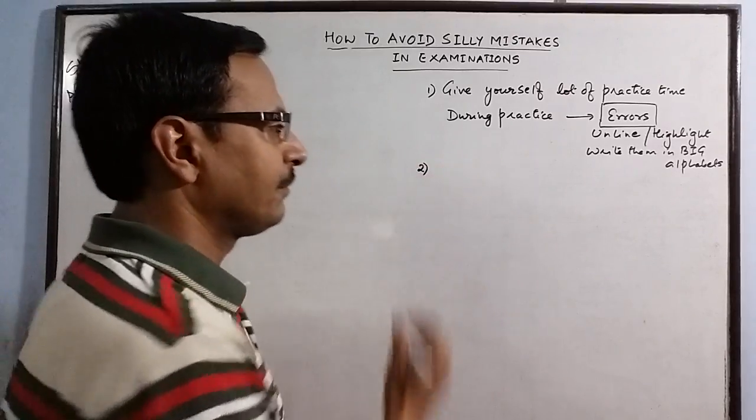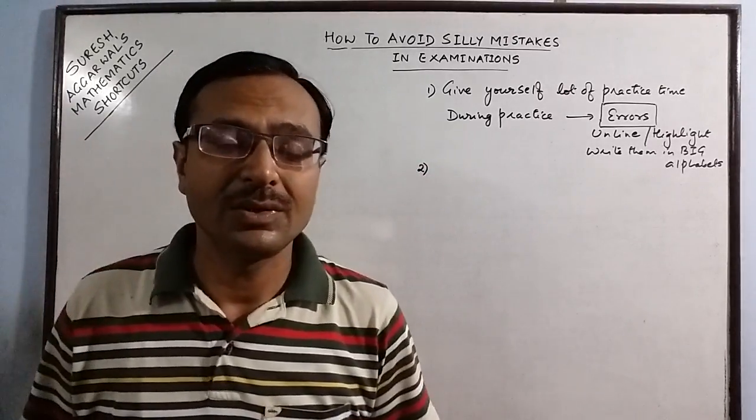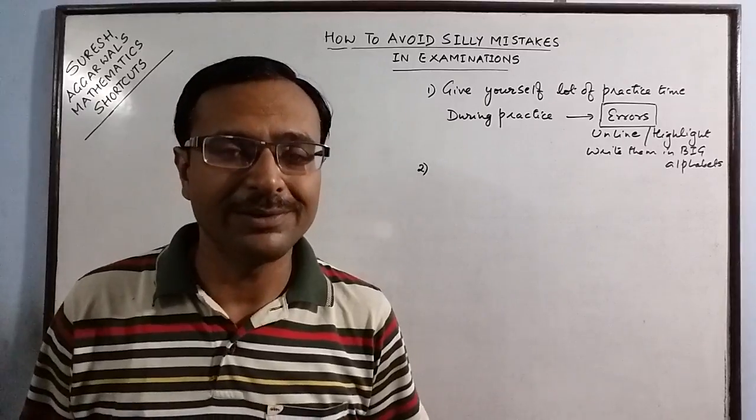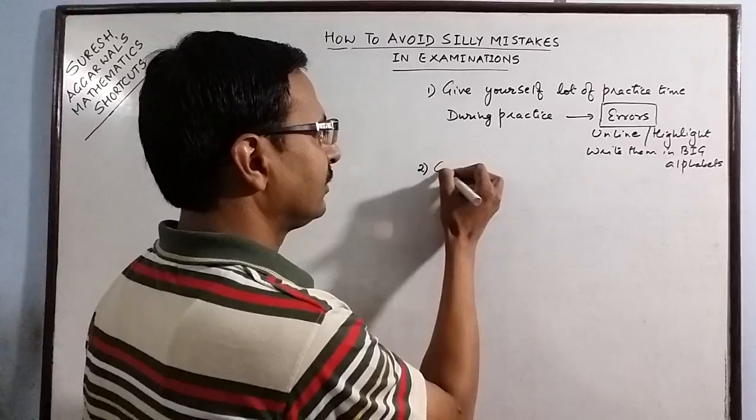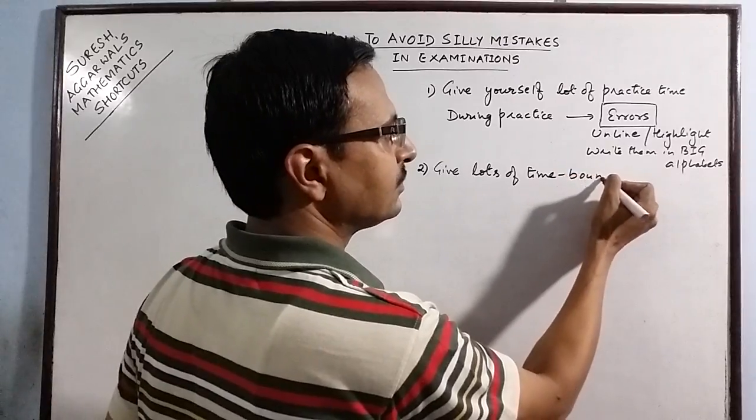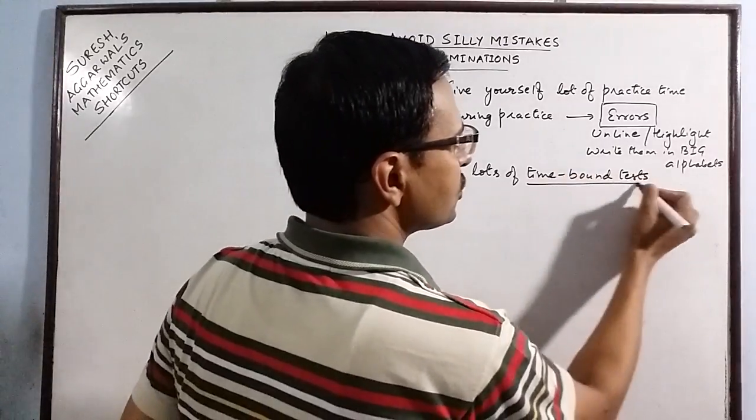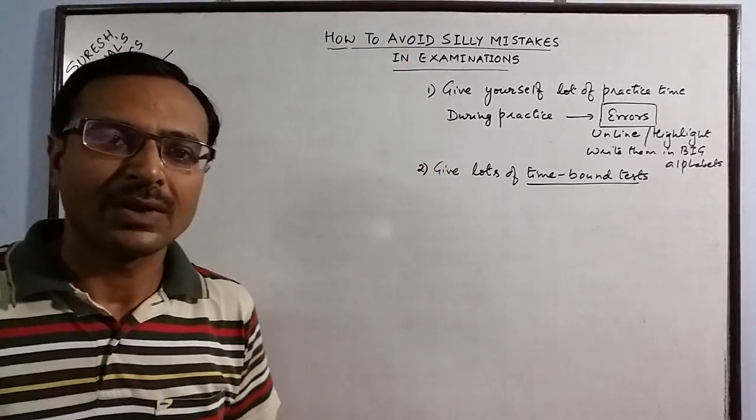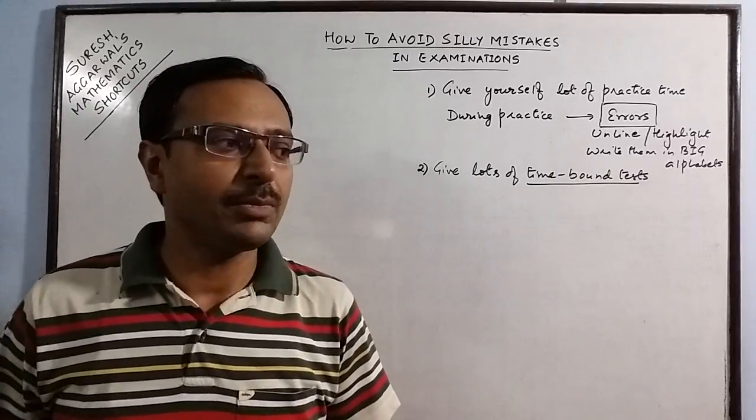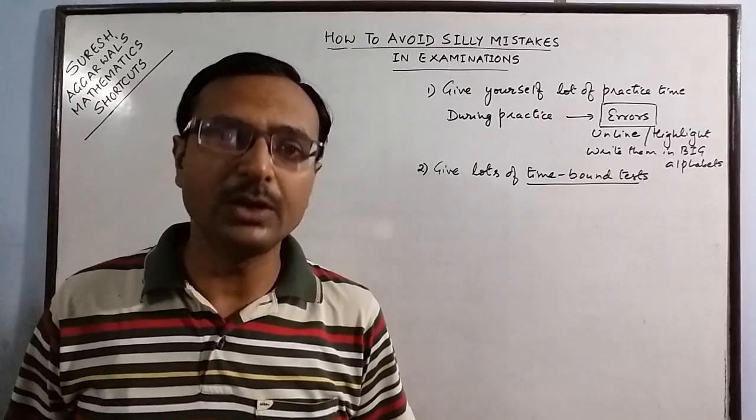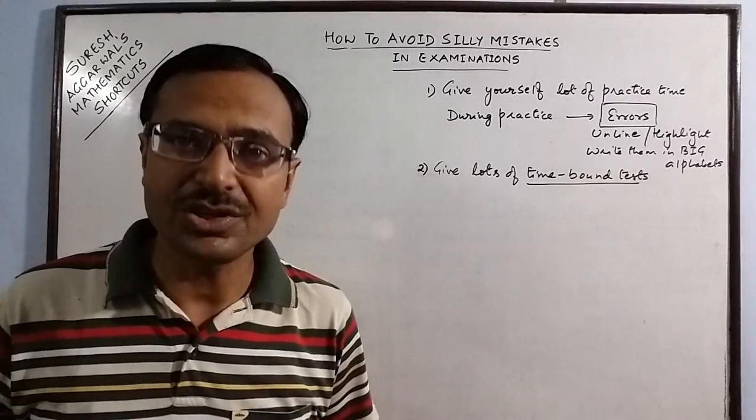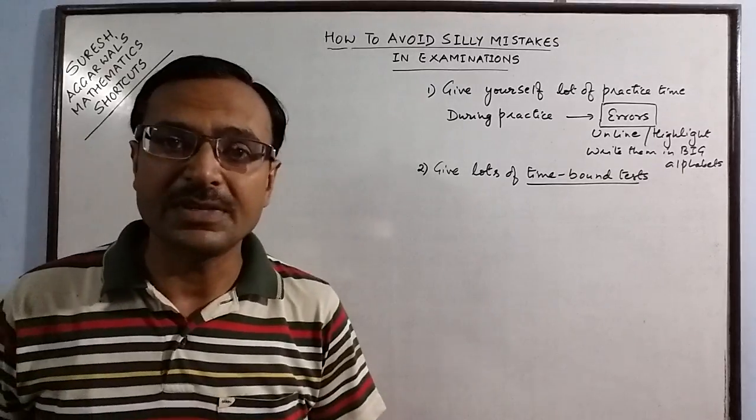Second is the errors which come up in examination unexpectedly are mostly due to time constraint. So you have to give yourself lots of time-bound tests. Students commit this mistake at home—they study according to their convenience and they do not take sufficient number of questions and give themselves a challenge to complete those questions within a stipulated time. Time-bound tests is very essential for removing these silly mistakes in examinations.